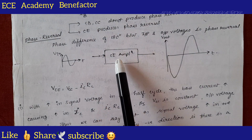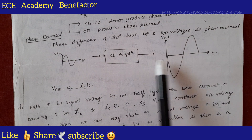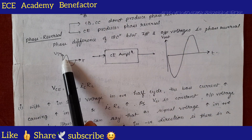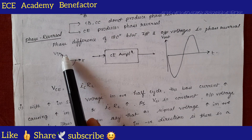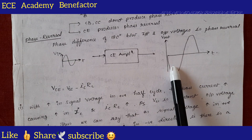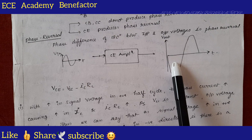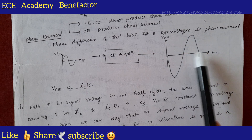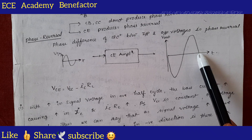What does phase reversal look like? When an input signal Vin is passed through a CE amplifier, Vout will have a phase reversal — that is, for the positive input cycle, the negative half is appearing. The amplitude is increased as well as the phase is shifted by 180 degrees. For a positive phase at the output we get the negative phase, and for the negative phase we get the positive cycle. This is known as phase reversal.